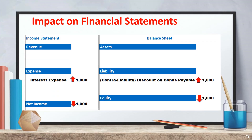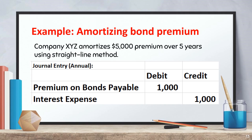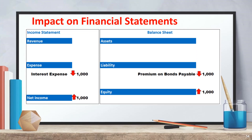Amortizing the discount increases interest expense each year. On the income statement, interest expense increases by $1,000, reducing net income by $1,000. On the balance sheet, discount on bonds payable (a contra liability) increases liabilities by $1,000, and equity decreases by $1,000. For premium amortization, Company XYZ amortizes a $5,000 premium over five years using the straight-line method. Journal entry: debit premium on bonds payable $1,000, credit interest expense $1,000. This decreases interest expense each year, increasing net income by $1,000, and equity increases by $1,000.